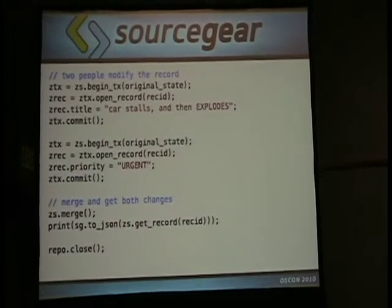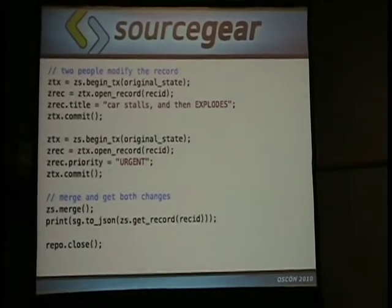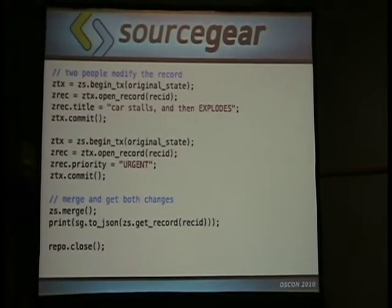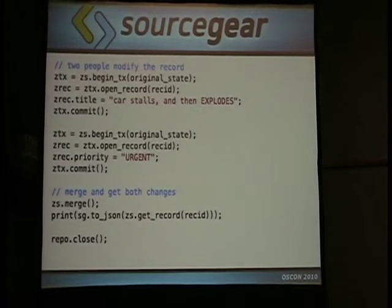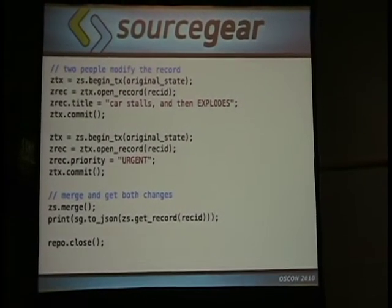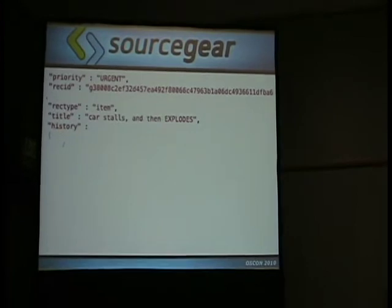New information came in and two people adjusted the database. One person changed the title to 'The Car Stalls and Then It Explodes' but didn't change the priority. The other person thought it was urgent so changed the priority but gave no details. Both checked in their changes and now they need to be merged. With field-level merge, Veracity is okay with this and will merge the record — the result shows both fields were accepted.